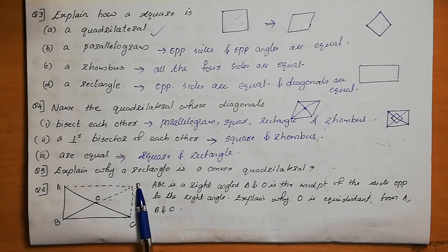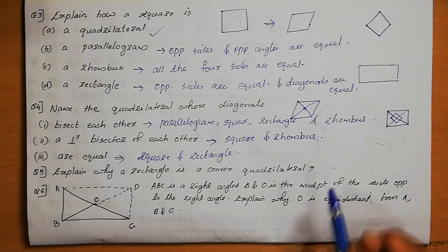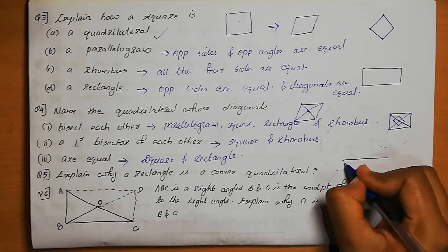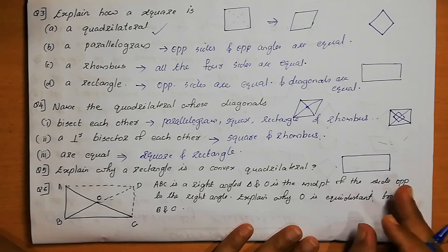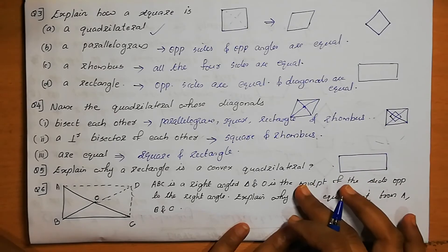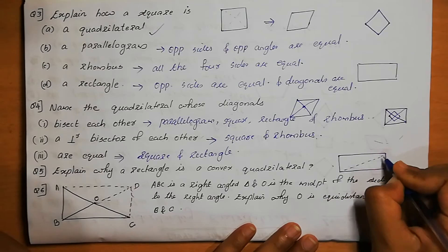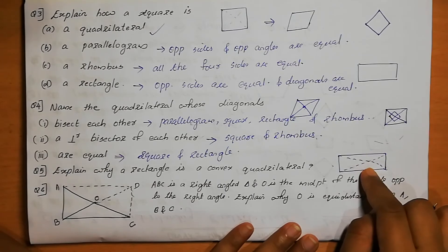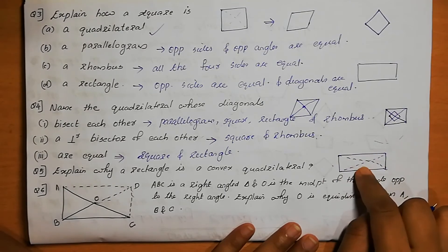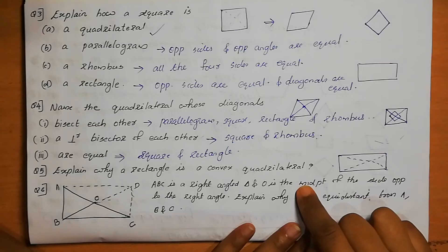Question number 5: Explain why a rectangle is a convex quadrilateral. There is convex and there is concave. A rectangle is a convex quadrilateral because when you draw the diagonals, they lie inside the figure — the diagonals are interior to the rectangle. So it is called a convex quadrilateral.